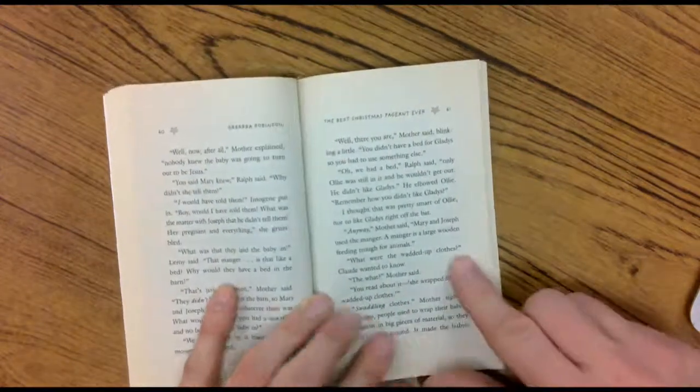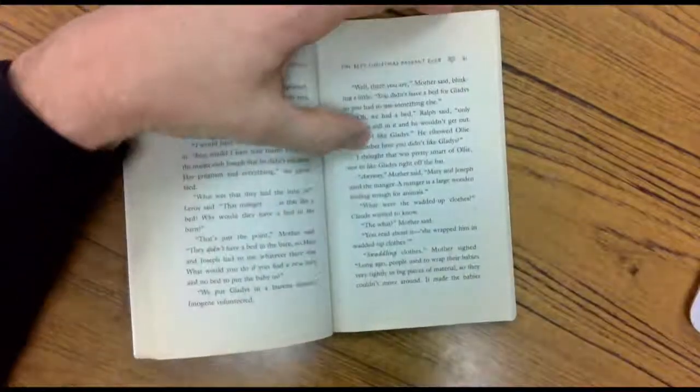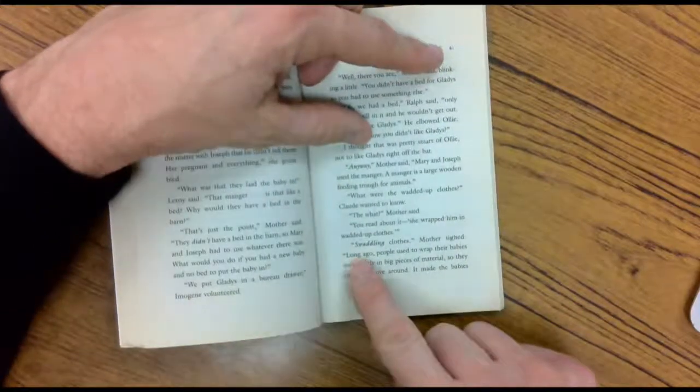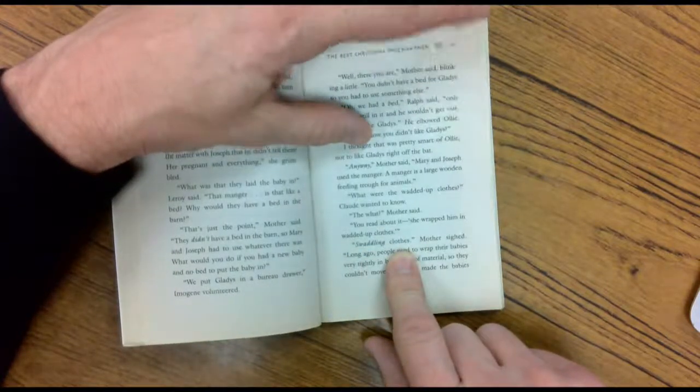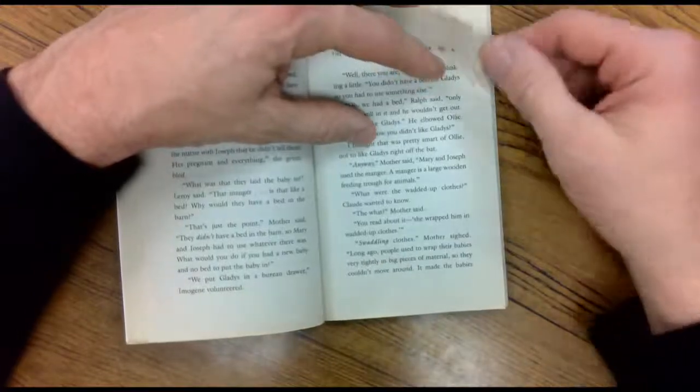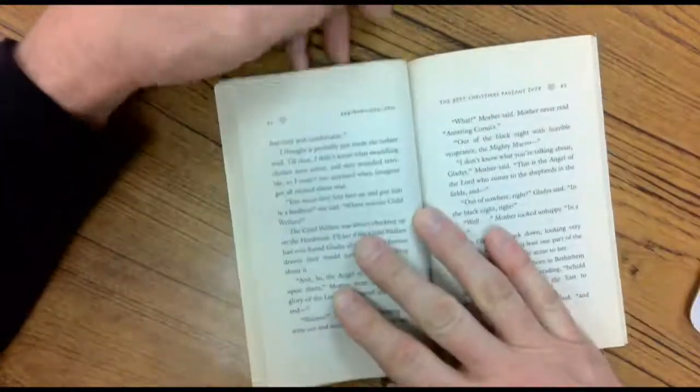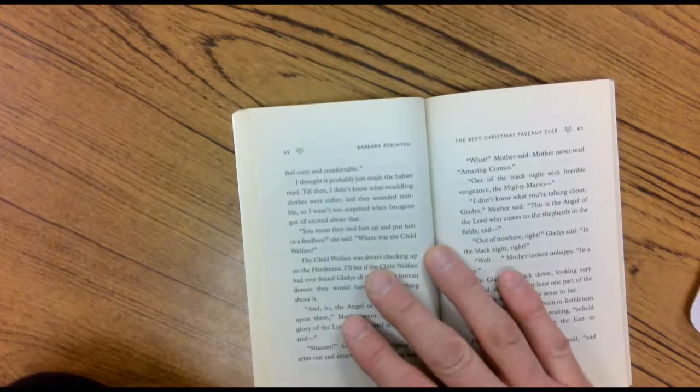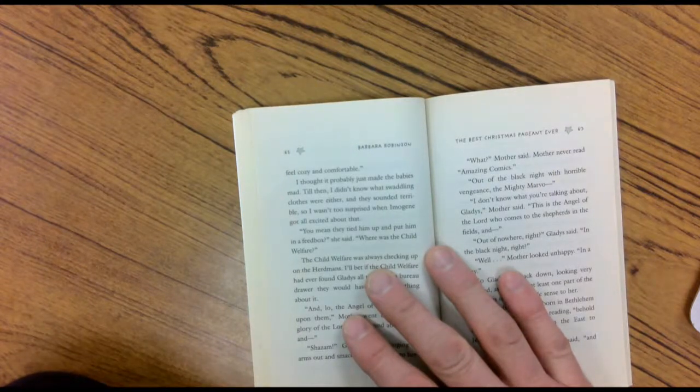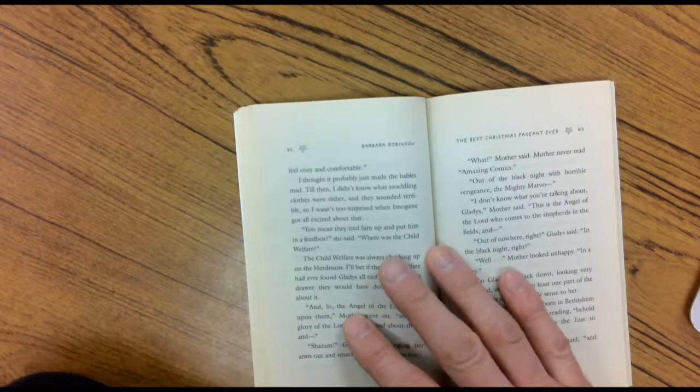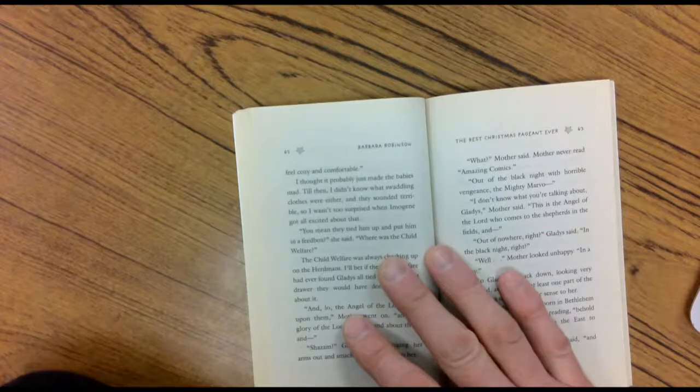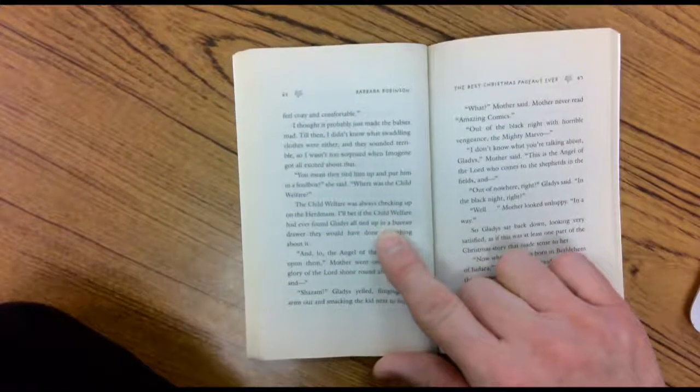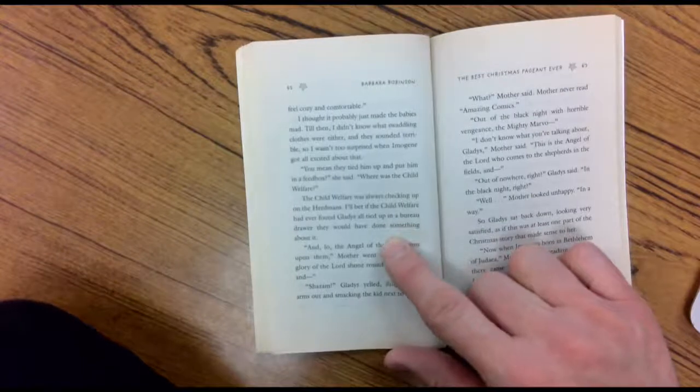Anyway, Mother said, Mary and Joseph used a manger. A manger is a large wooden feeding trough for animals. What was the wadded up clothes? Claude wanted to know. The what, Mother said. You read about it. She wrapped them up in wadded up clothes. That's kind of funny that she thought that because sometimes it sounds like that. It's actually swaddling, swaddling clothes. Mother said, long ago, people used to wrap their babies very tightly in a big piece of material so they couldn't move around. It made the babies feel cozy and comfortable. I thought it probably just made the babies mad. Till then, I didn't know what swaddling clothes were either. And they sounded terrible. So I wasn't too surprised when Imogene got all excited about that. You mean they tied him up and put him in a feed box, she said? Where was the child welfare?